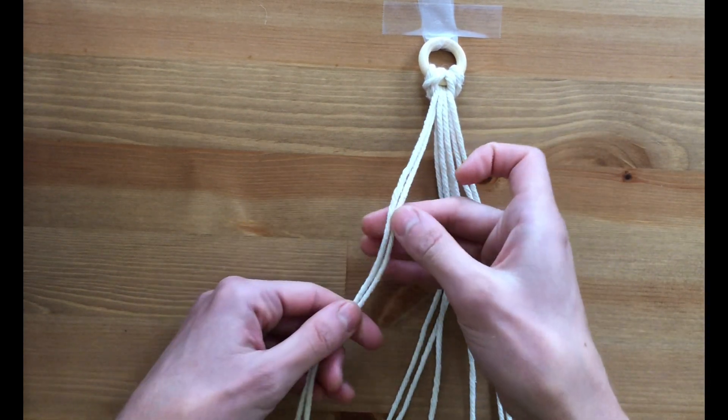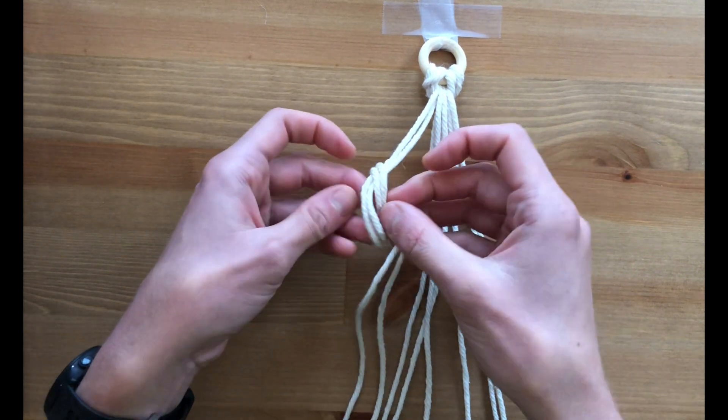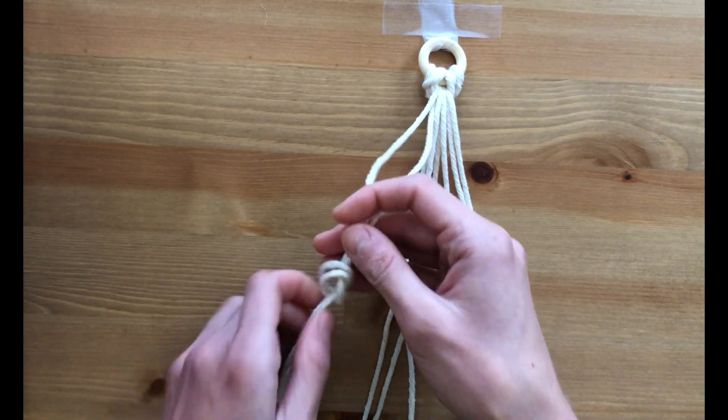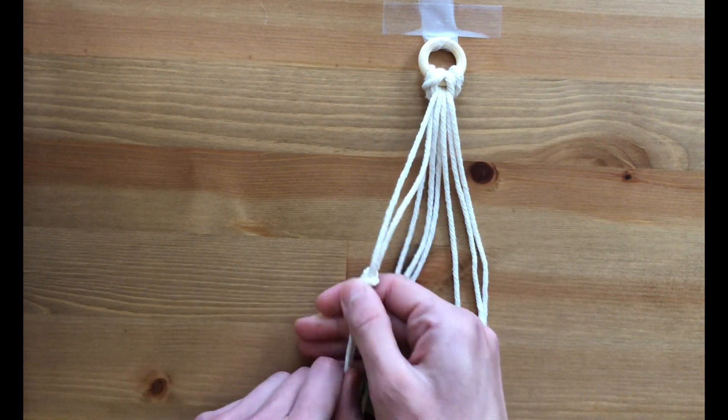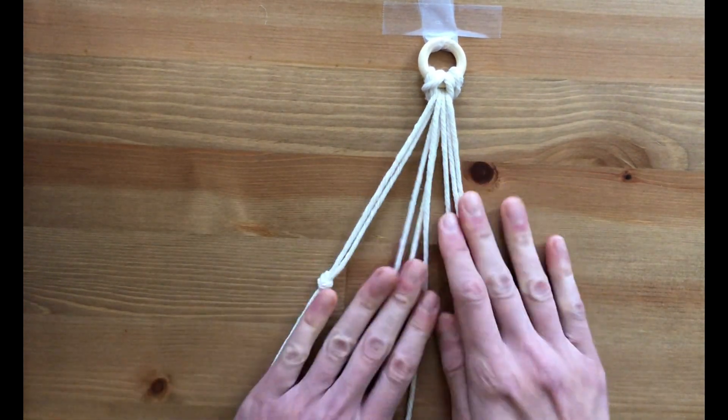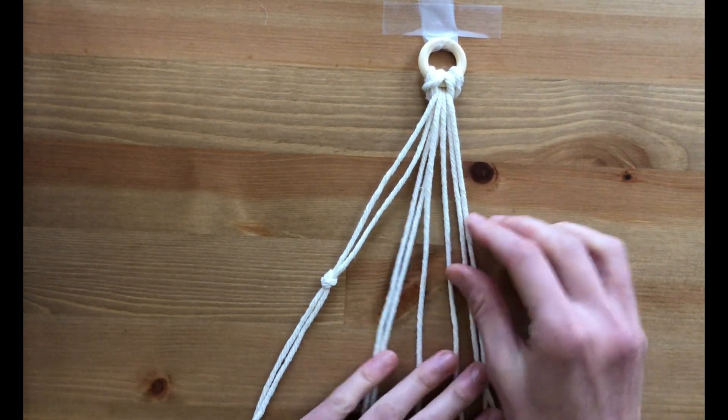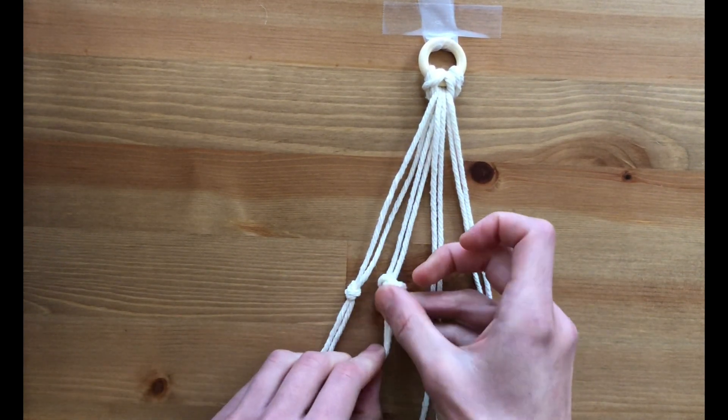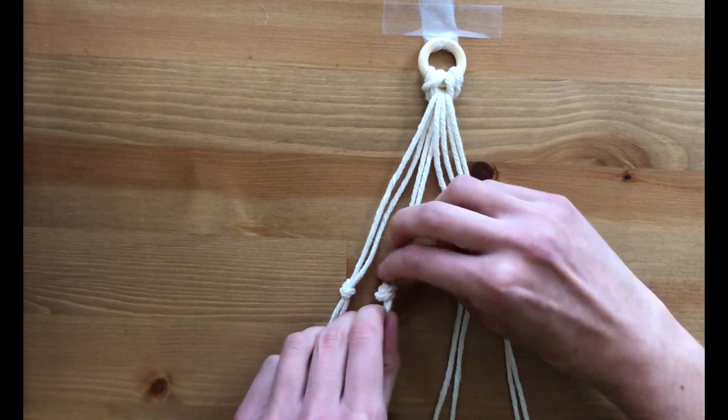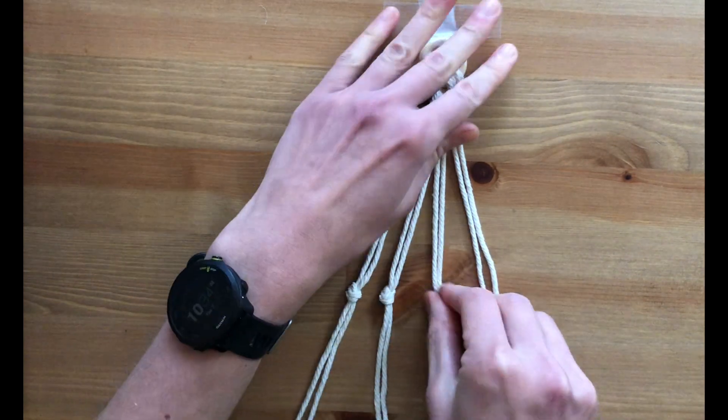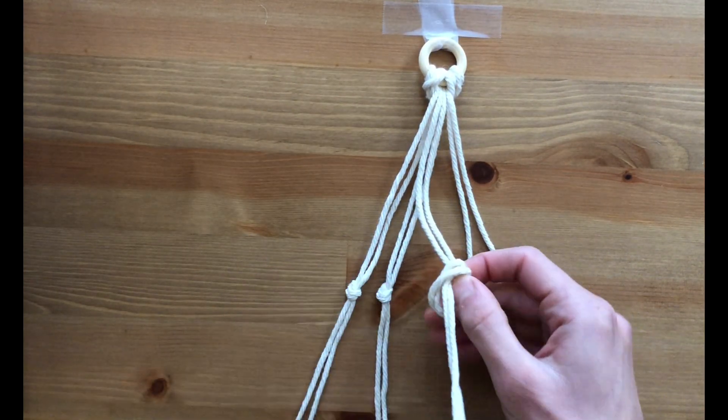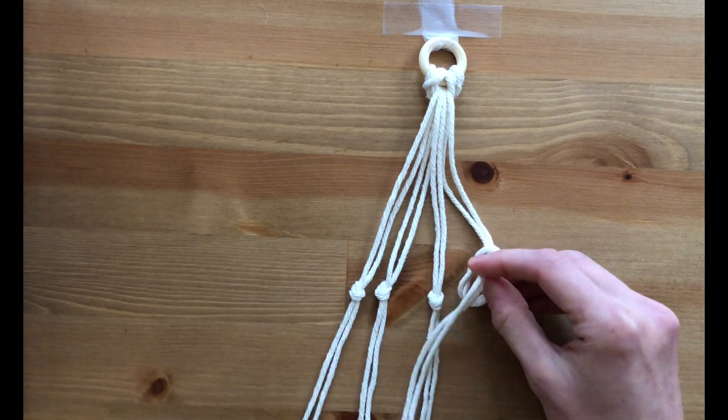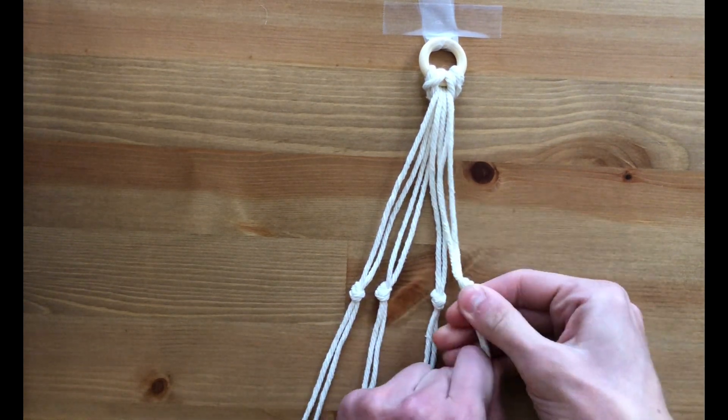So I'm going to take two strings, and here it's nothing fancy, it's just a simple knot. Actually, I'm going to go a little bit further down. There we go, nothing fancy, just a simple knot. And now I'm going to do that three more times with the rest of the six strings. I'm just trying to line up so they're all about the same length.